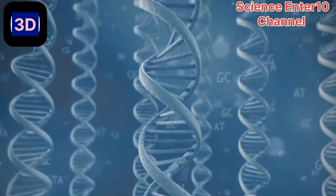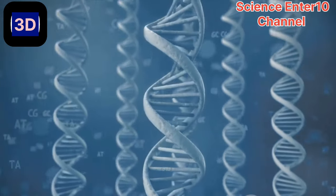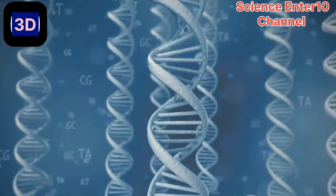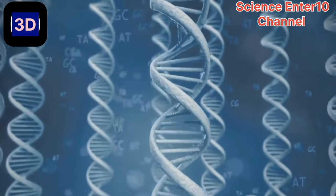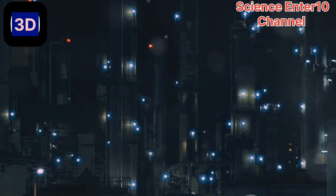Every single detail is meticulously copied, ensuring the new cell will be a perfect twin of the original. Finally, we reach the G2 phase. This is the final prep before the big event. In our city, it's like making sure all systems are functioning smoothly, from water supply to electricity.